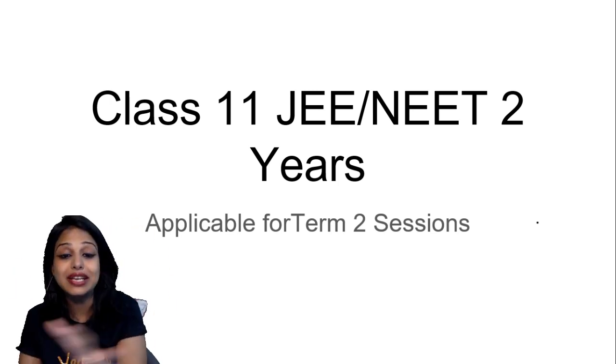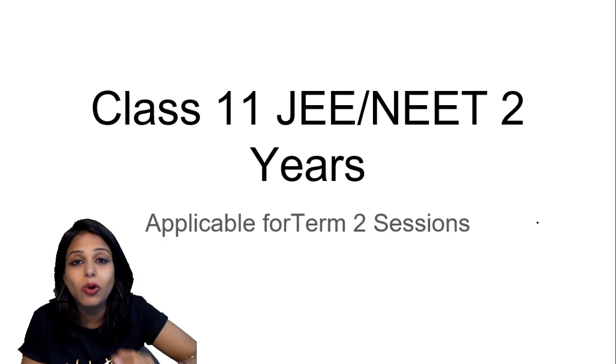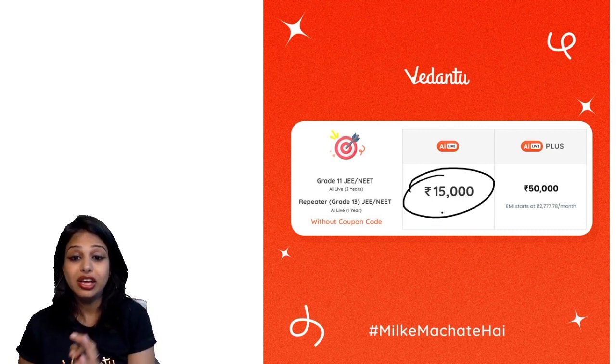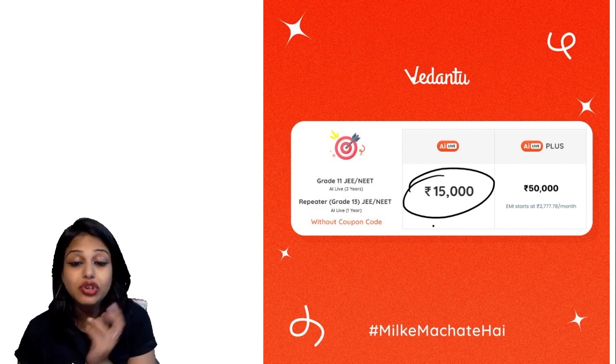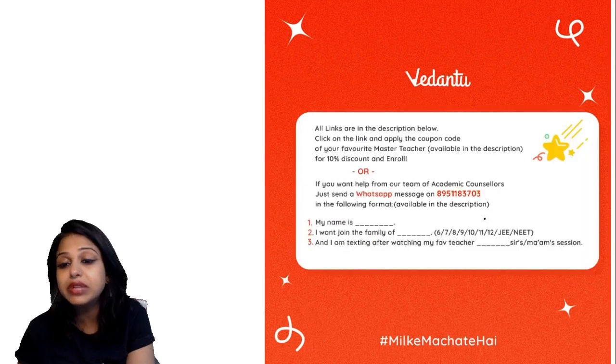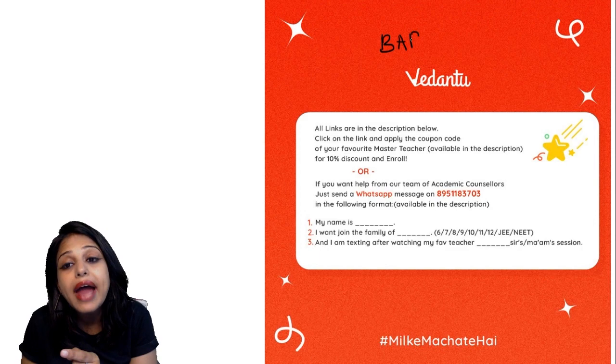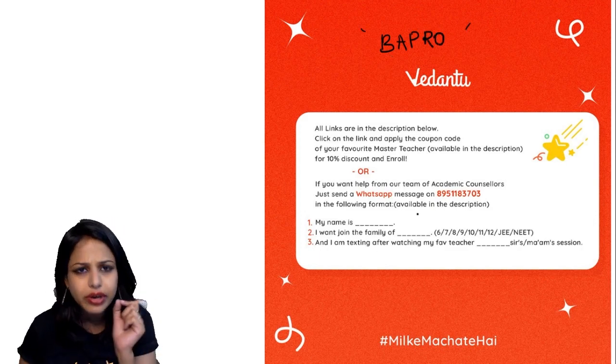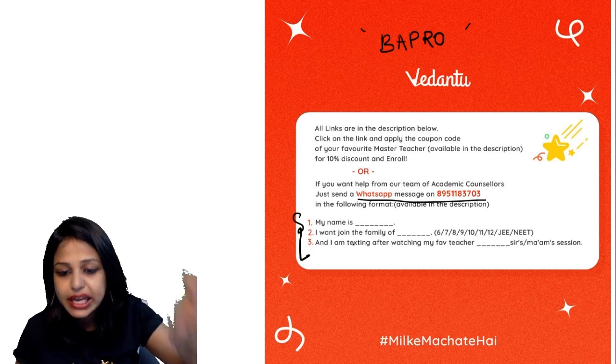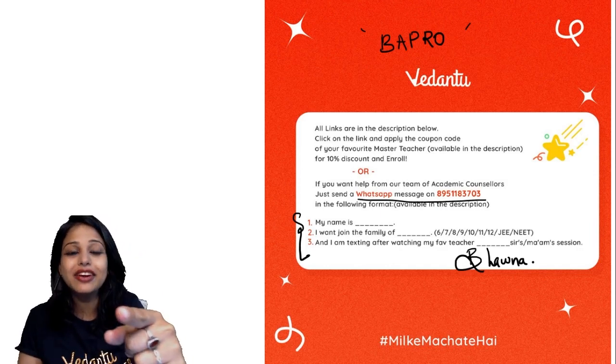If you're in class 10th moving to 11th and want to pursue JEE or NEET, you know outside you have to pay in lakhs, but at Vedantu AI Live the cost is only 15,000 for two year preparation. With AI Live Plus it's 50,000, but with the code it comes down to 13,500 and 45,000 only. This should not be missed. See the link in the description, apply code BAPRO and get that extra discount. You can also get help by sending a WhatsApp message in the format: your name, which family you want to join, and that you're texting after seeing Bhavna ma'am's session. This is going to change your life. Take care of yourself and all the best for your exams.